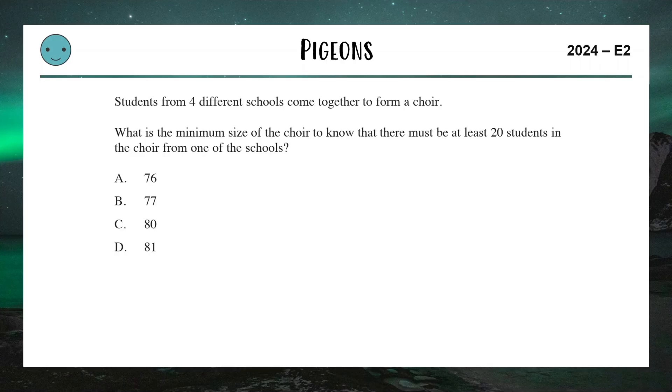We have students from four schools come together to form a choir. That's nice. What is the minimum size of the choir so there must be at least 20 students in the choir from one of the schools? This is a question where we're going to be applying the pigeonhole principle.